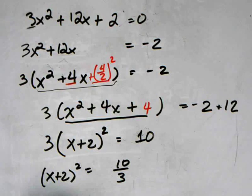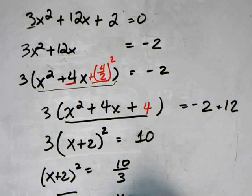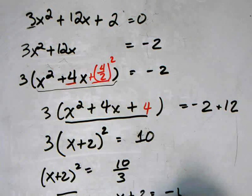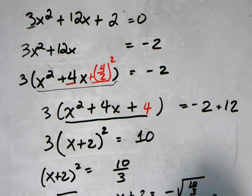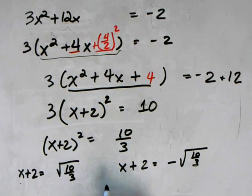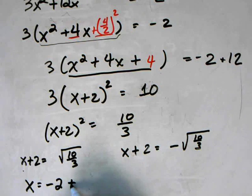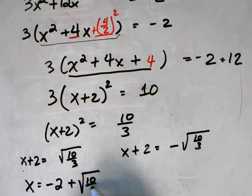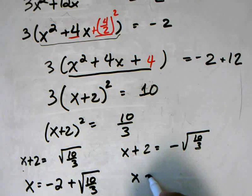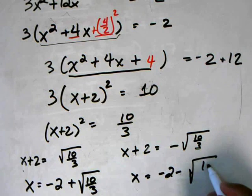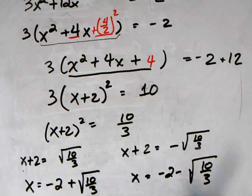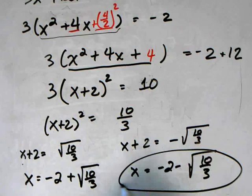Take the square root of both sides and I get x + 2 = √(10/3) and x + 2 = -√(10/3). Then I can subtract 2 from both sides: x = -2 + √(10/3) and x = -2 - √(10/3). These are the two possible answers.